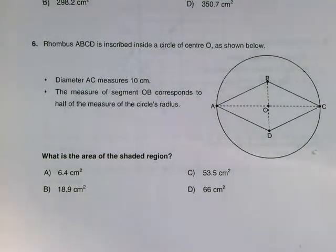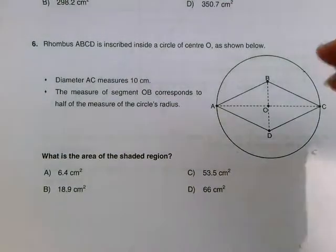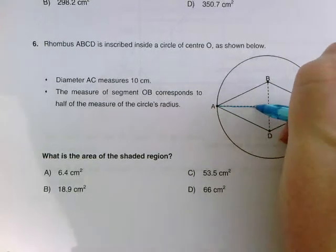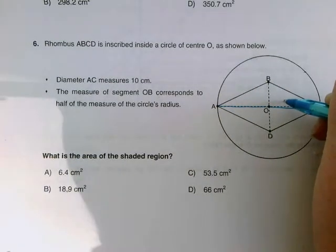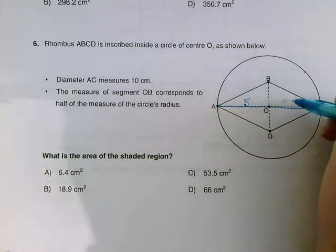Diameter AC measures 10 centimeters. So it's telling you this is the diameter of a circle. This is 10. So we know right away that if we split it in half, this is 5 and 5.